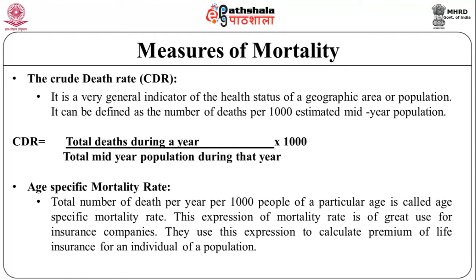Age-specific mortality rate: the total number of deaths per year per thousand people of a particular age is called the age-specific mortality rate. This expression of mortality rate is of great use for insurance companies, which use it to calculate the premium of life insurance for an individual.